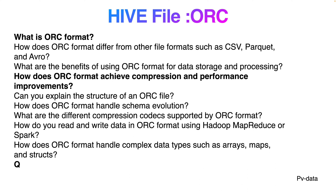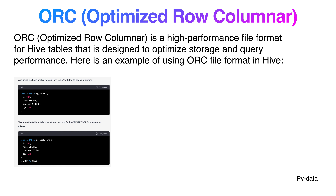And how does ORC format handle complex data types such as arrays, maps, and structs? ORC stands for Optimized Row Columnar. ORC is a high-performance file format for Hive tables that is designed to optimize storage and query performance. An example of using ORC format: you create a simple table called my_table and then define it using ORC — this is the way to do it.